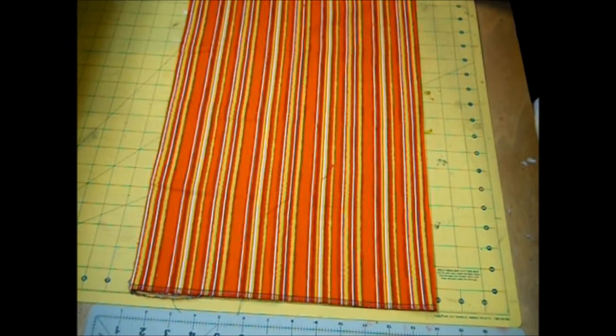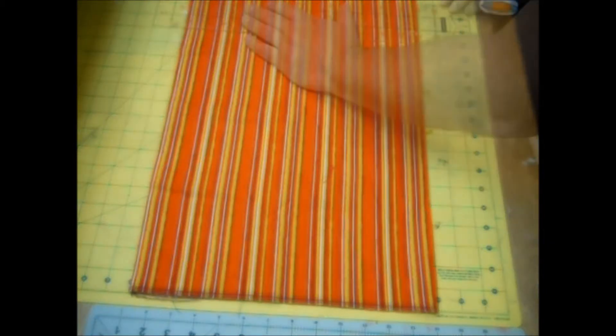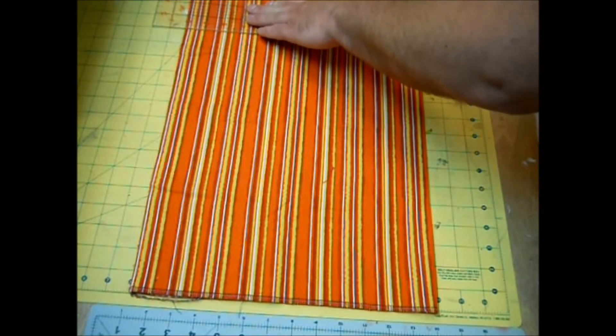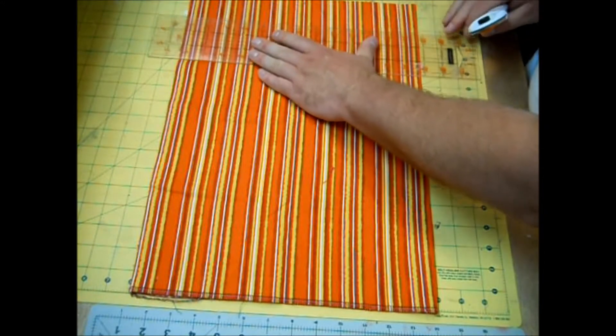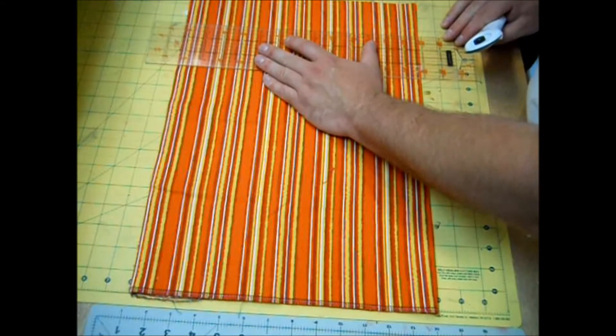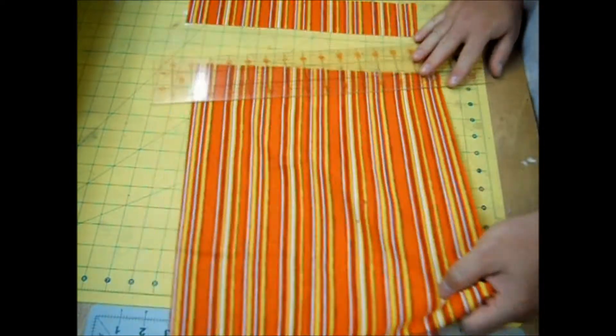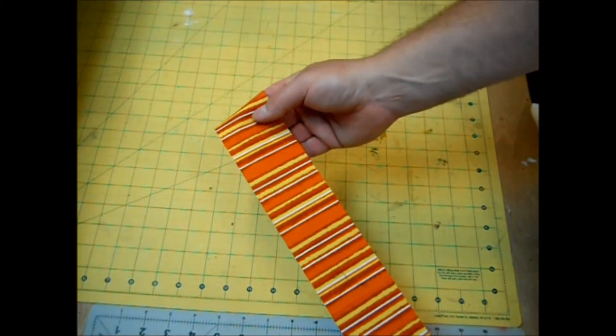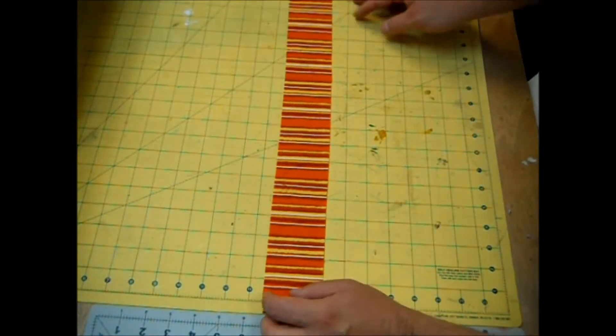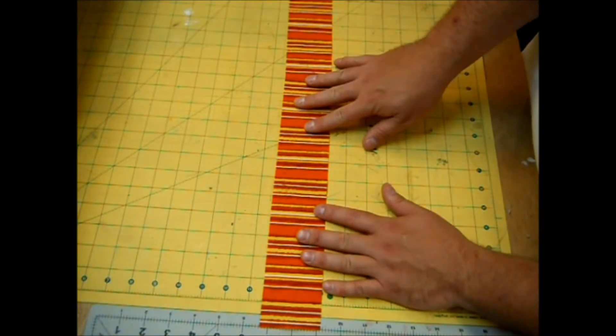Alright, so after digging through my fabric stash and scrap box, I decided I'm going to make a dozen of these fabric flowers. The first thing that you're going to want to do is cut each of your fabrics into two and a half by 24 inch strips. Just like that, and you want to do that to all of your fabrics. For video purposes I'm just going to do this one.